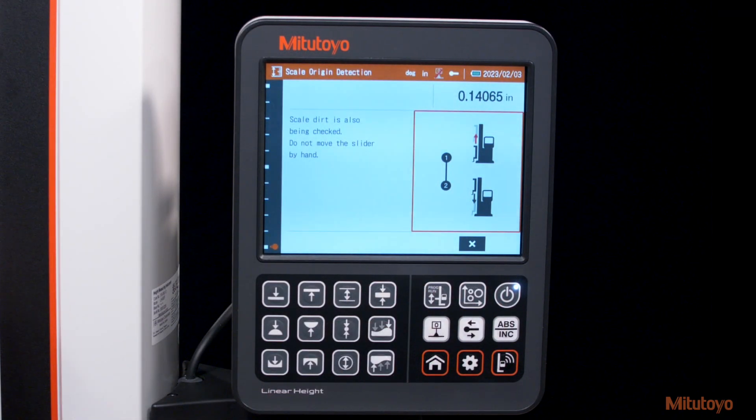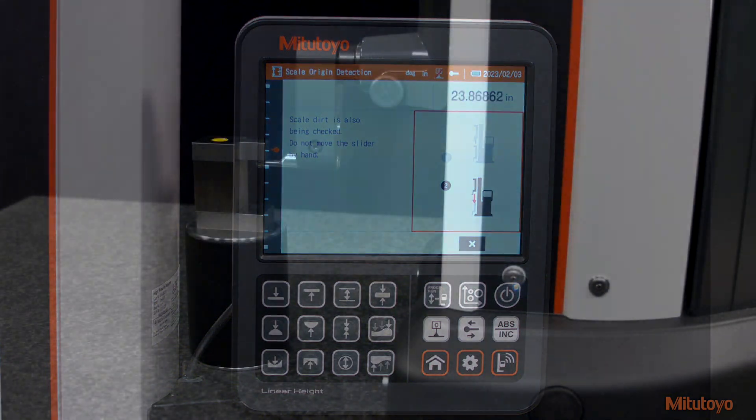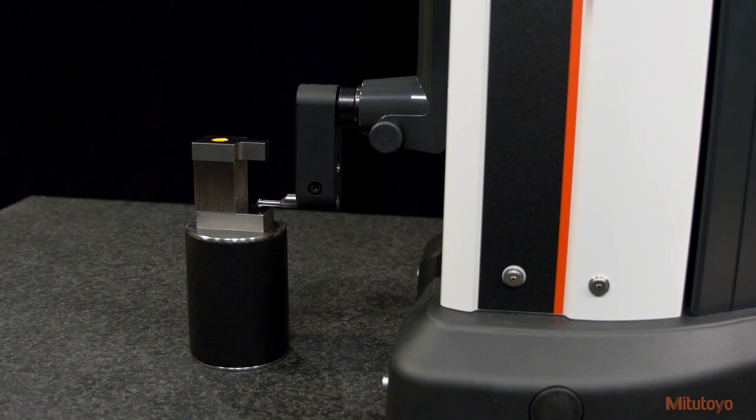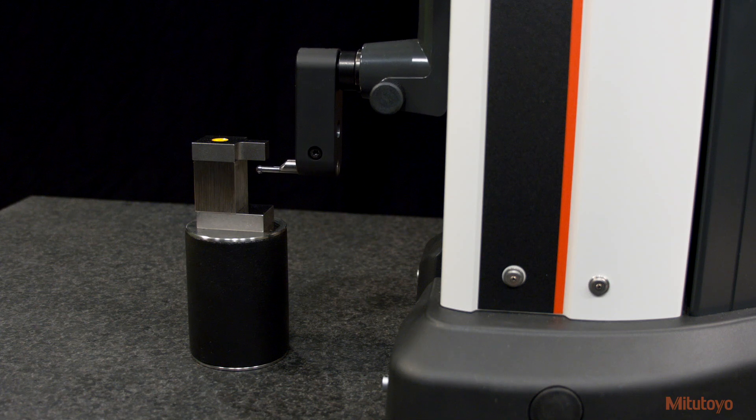On startup, the LH600F automatically checks for scale contamination and then displays a step-by-step guide through probe compensation to ensure precision is maintained.